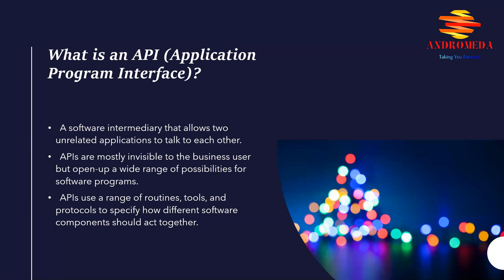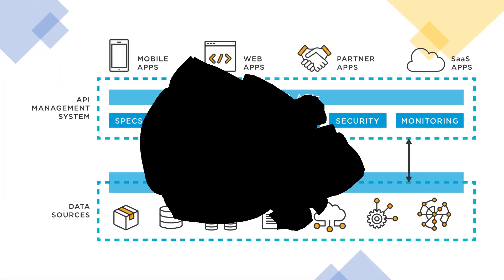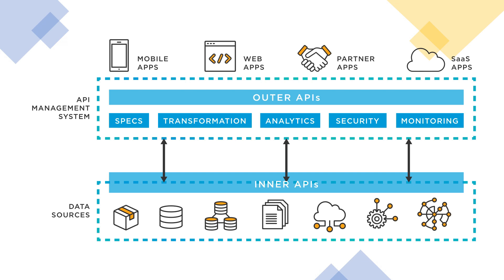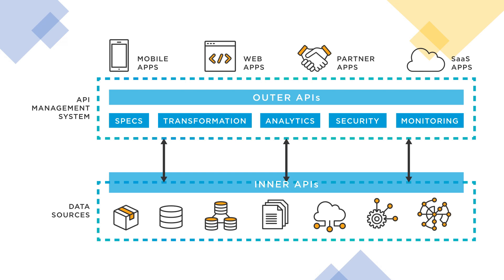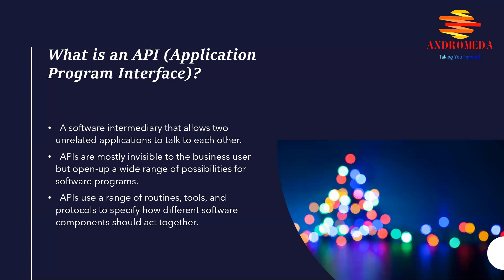What is an API? An API, or application programming interface, is a software intermediary that allows two unrelated applications to talk to each other. It acts as a bridge, taking a request or message from one program and then delivering it to another, translating the messages and performing protocols based on what the API is programmed to do. APIs are present in almost every aspect of our digital lives, the hidden backbone to our modern world of plugins, digital interfacing, and software communication.